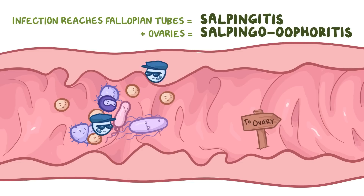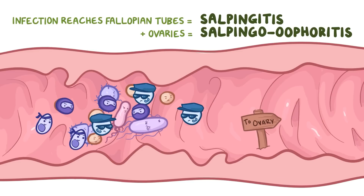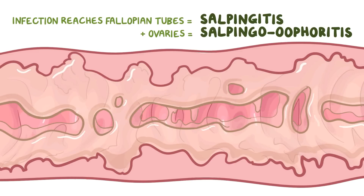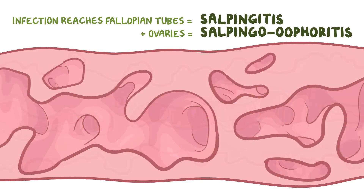The infection triggers a response from the body, which sends in neutrophils, plasma cells, and lymphocytes into the fallopian tubes. But this actually damages the tubal epithelium, and the tubes become filled with pus. When scar tissue forms to repair the damage, areas with damaged epithelium tend to stick to one another, creating closed-off pockets and little dead-end pouches in the fallopian tubes.